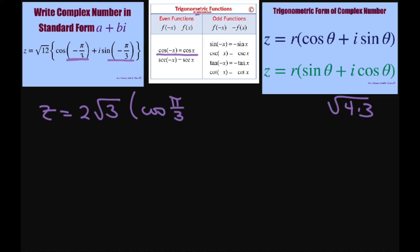And then sine is the odd function, so I can pull this negative out and put it in front of the sine and write negative i sine of pi divided by 3.